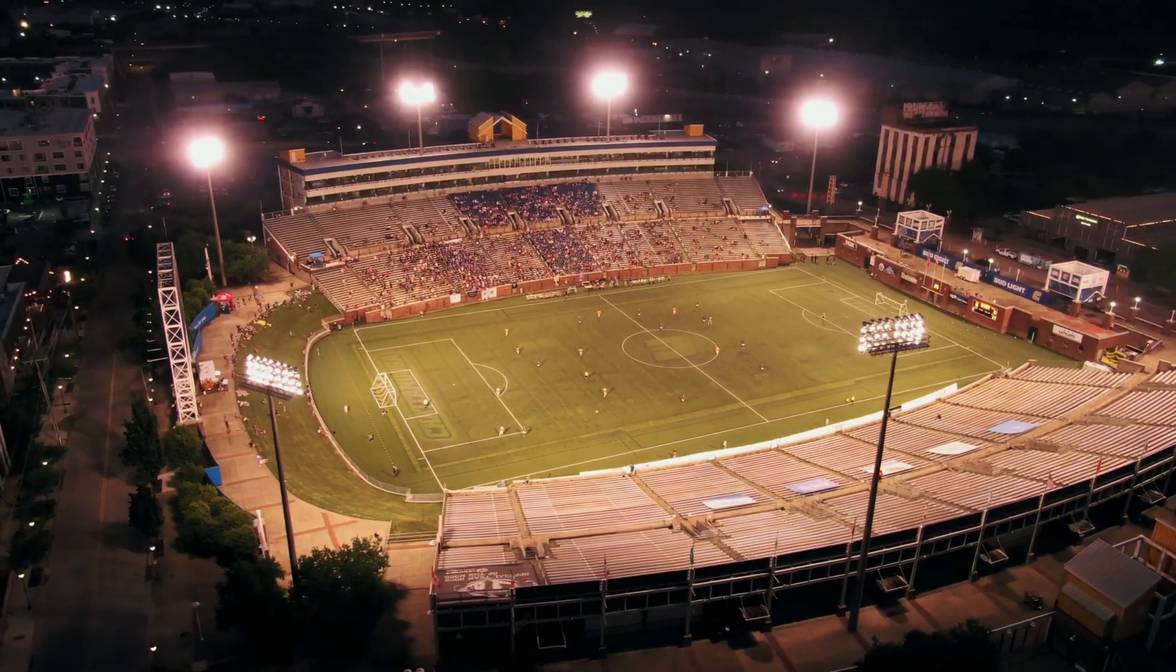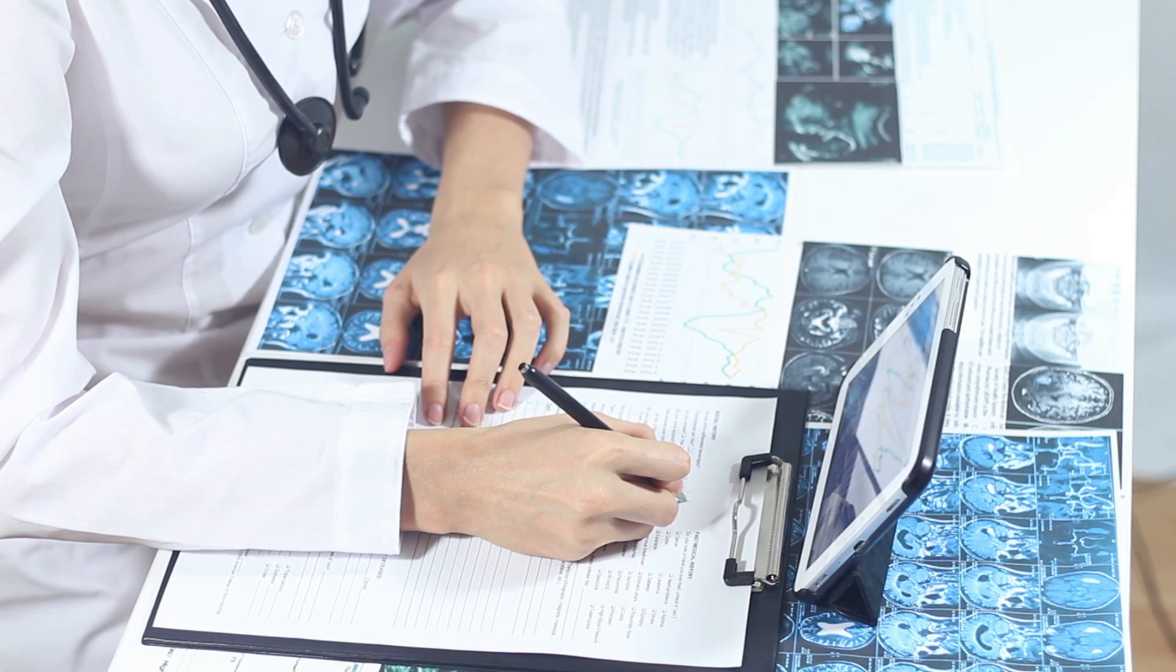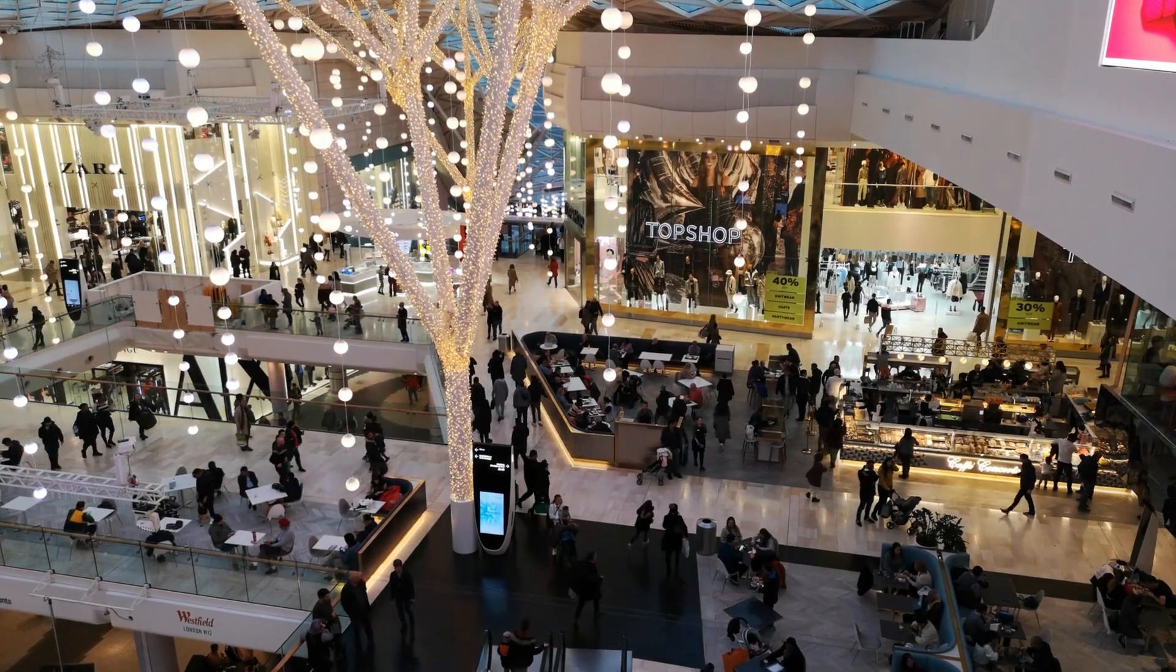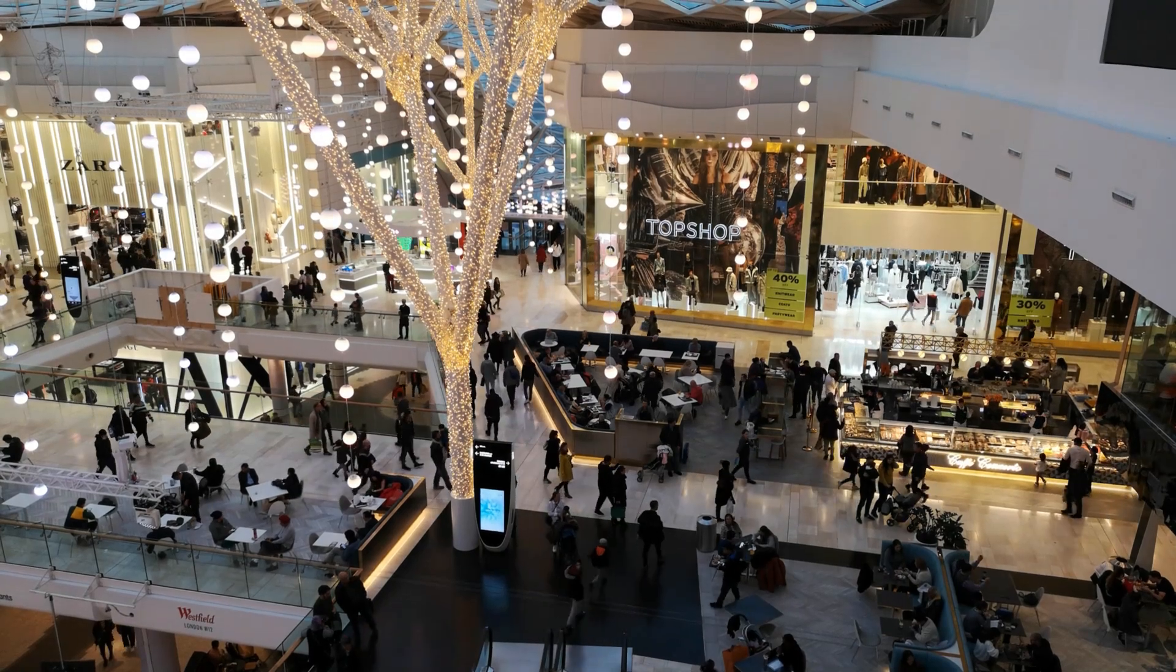So now you have a couple examples of goods and services that have a smaller range. But what about ones that have a larger range? Well, here we can look at professional sports stadiums, specialized hospitals, large retail stores such as the Mall of America. All of these are great examples of goods and services that have a really large range. And that's because they offer something that you can't find in other locations.